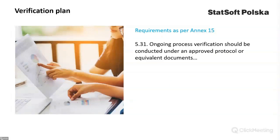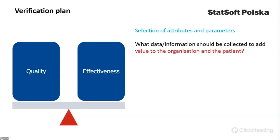As per Annex 15, ongoing process verification should be conducted under an approved protocol or equivalent documents. The first question to be answered is: what data and information should be collected to add value to the organization and the patient? Data should be collected for parameters that are critical to the safety, efficacy and quality of the product. In addition, data should be collected for parameters that are technologically important and the analysis of which will improve the effectiveness of the technological process by reducing waste and shortening the production cycle time.